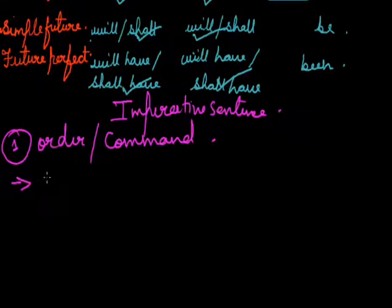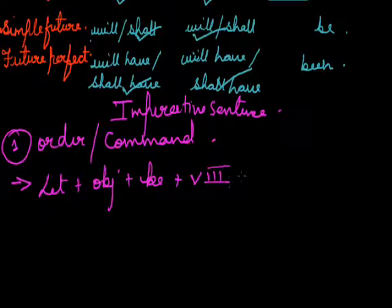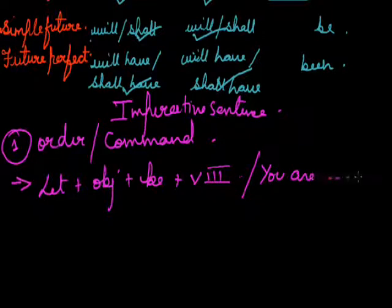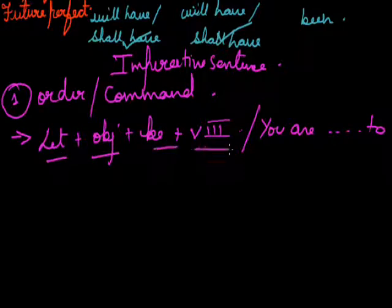The passive of a command will start with 'let.' The structure is: let + object + be form + verb third form. Or you can write 'you are requested to.' For example, 'lock all the doors' becomes 'let all the doors be locked' or 'you are requested to lock all the doors.'